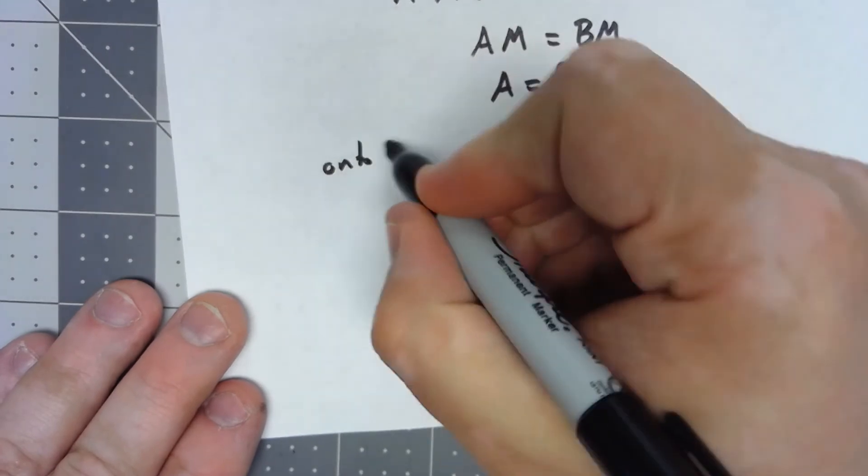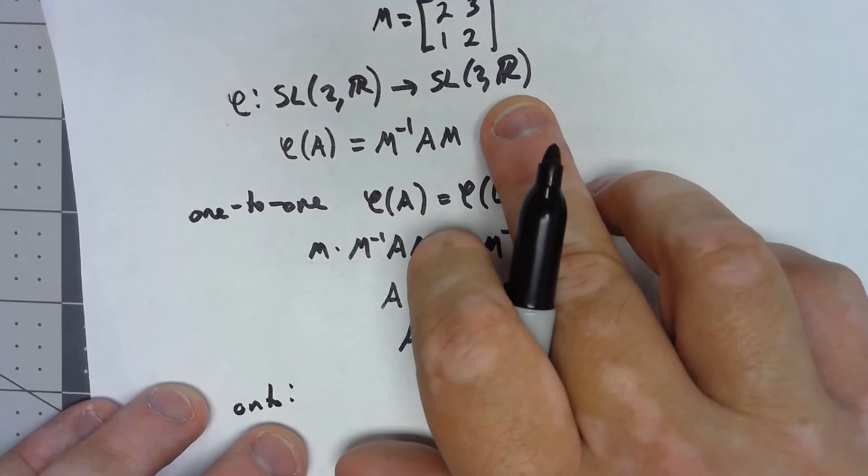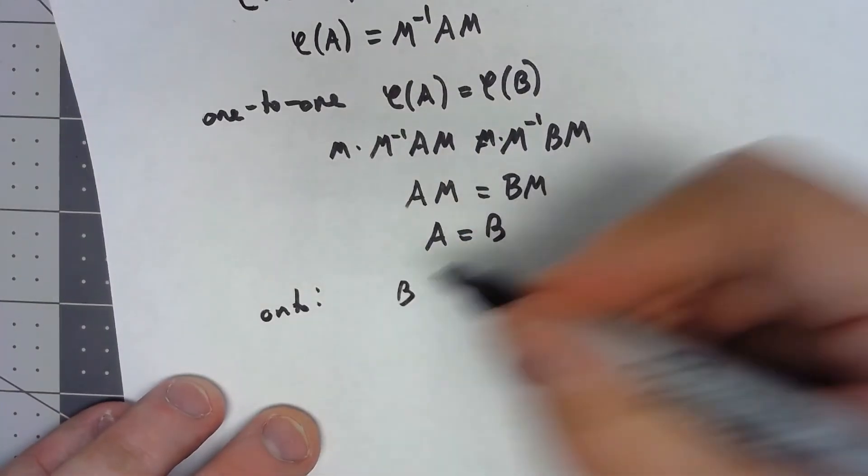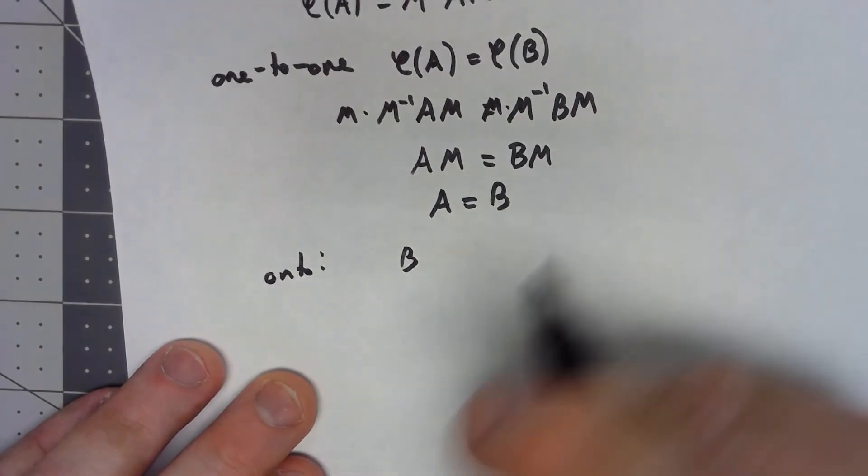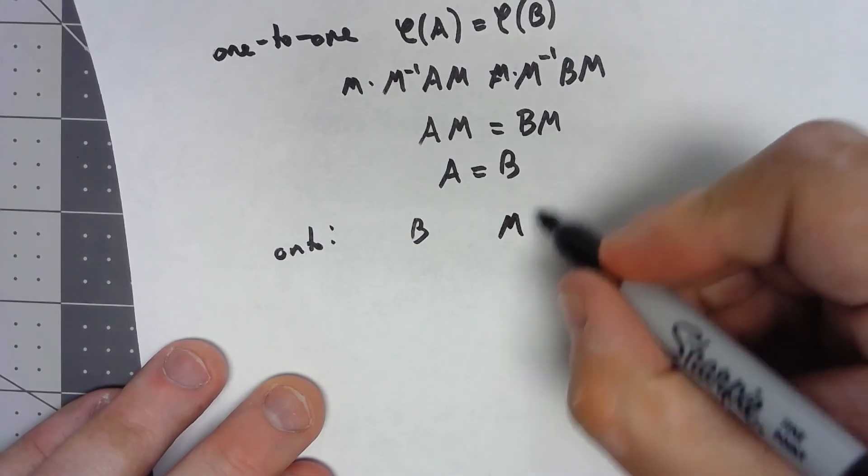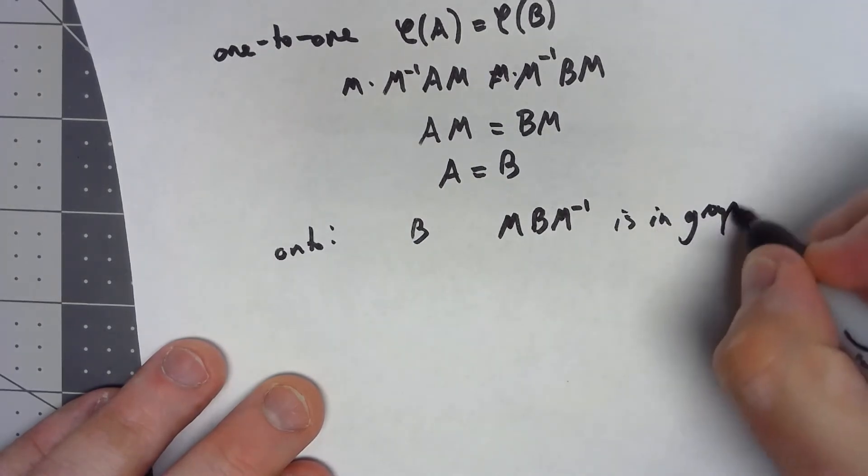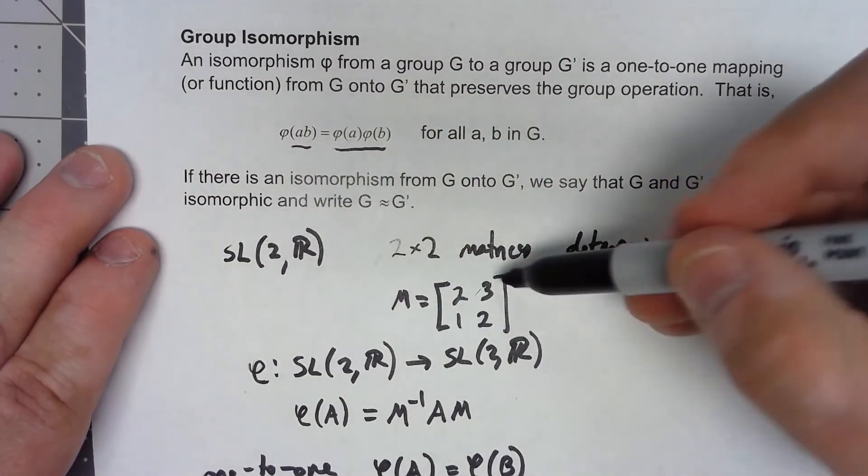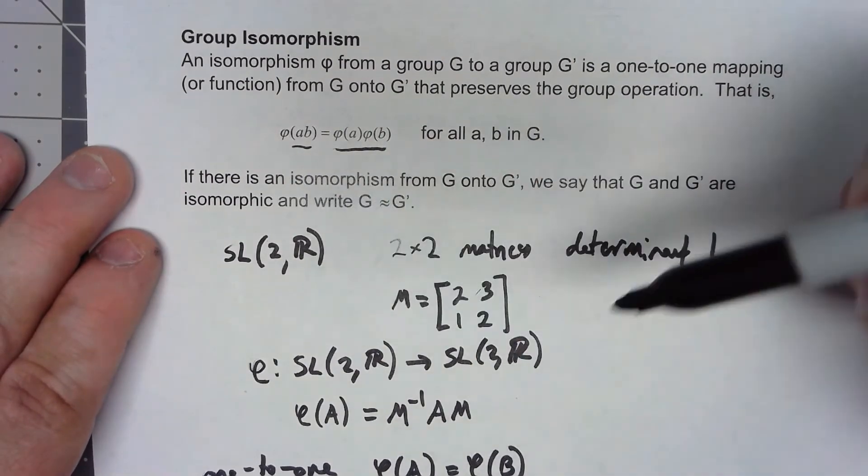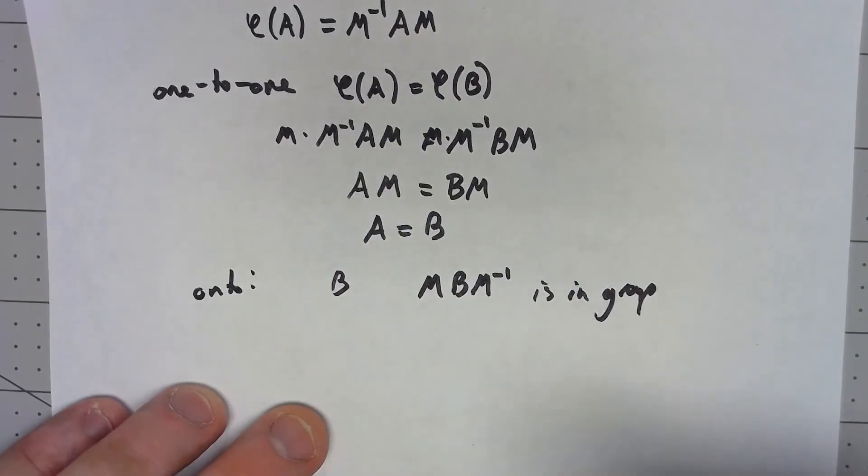To show onto, I take any element of the codomain, so any matrix B, and I want to show that there's something that maps onto B. Well, I claim that, first of all, MBM inverse is in my group, because the determinant of M is 1. That means that M is in my group, that means that M inverse is in my group, and so this is really just a product of group elements, it has to be in the group.